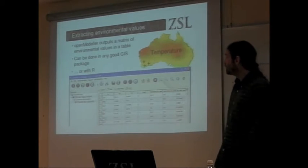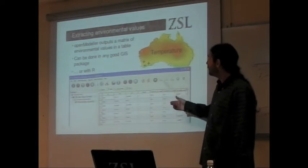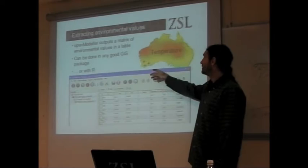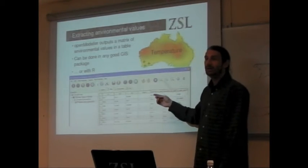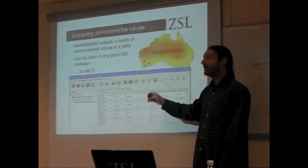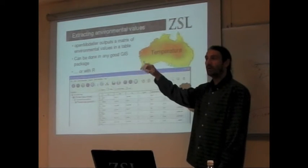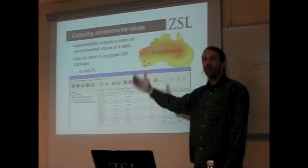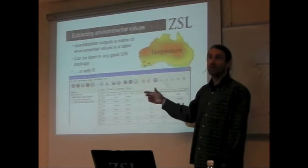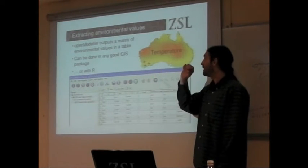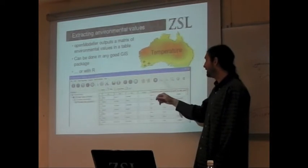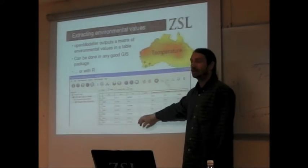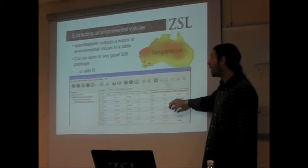Okay, so in order to do this sort of thing, we need to extract the environmental variables. So yesterday, we did this within QGIS where we plotted our points and we drilled down into the environmental layers to produce a matrix of data points so that for each sample we had the temperature and the precipitation and all of these.